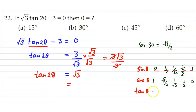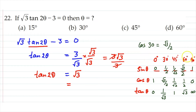Tangent is sine upon cosine. I advise you to remember the values directly because in competitive exams, if you are spending time making a table, it wastes time. You can remember tan 60° = √3 and tan 30° = 1/√3 — just two values to memorize.